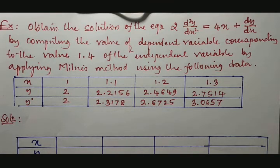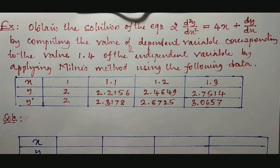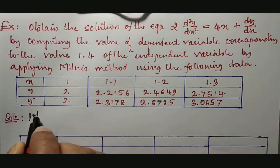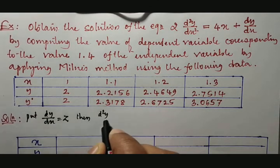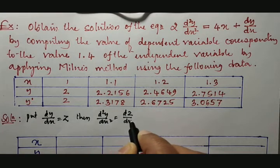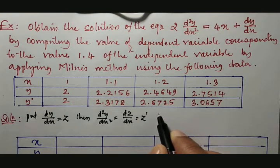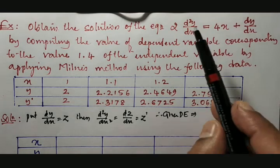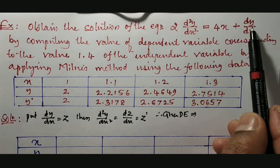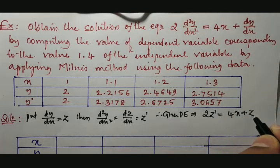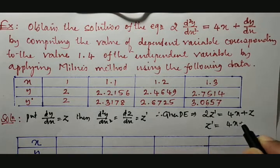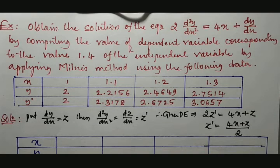What we need to do is obtain the value of y at x = 1.4. First, we take the substitution: put dy/dx = z. Then d²y/dx² = dz/dx = z'. Therefore, the given differential equation becomes 2z' = 4x + z, or z' = (4x + z) / 2.